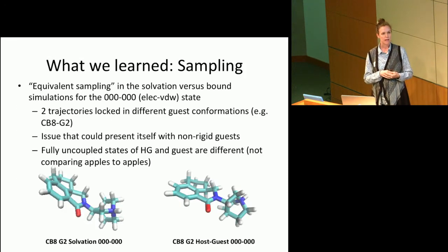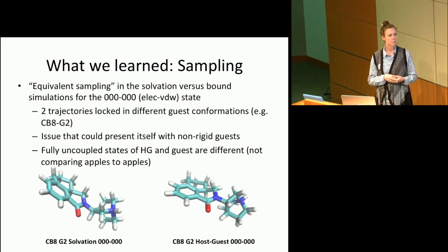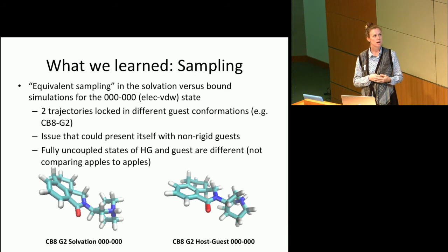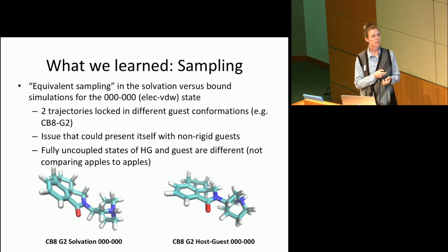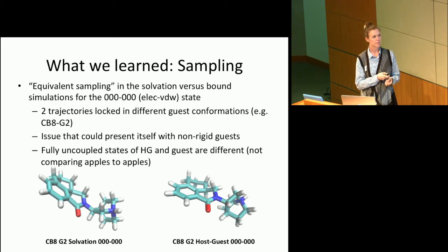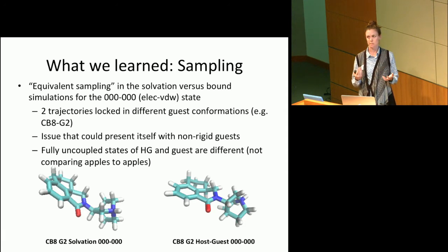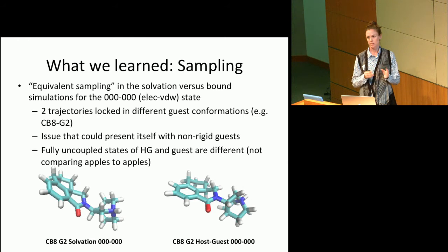Going back to analyze our simulations, we noticed that for one of our huge outliers, Guest 2, at the zero-zero lambda level — where we had annihilated the electrostatics and decoupled the van der Waals — there were actually two different conformations for our guest system. The guest solvated by itself took on one conformation, while the guest within the host-guest system at the zero-zero level had a different conformation. So we weren't comparing apples to apples, and needed to find a way to rectify the situation and achieve better sampling of both conformations at the fully decoupled and annihilated level.